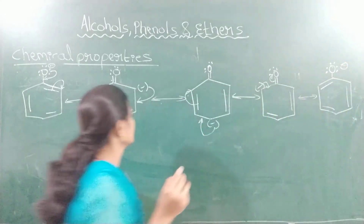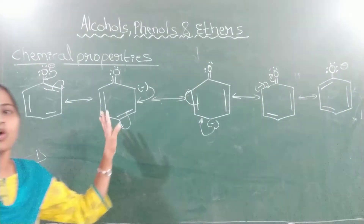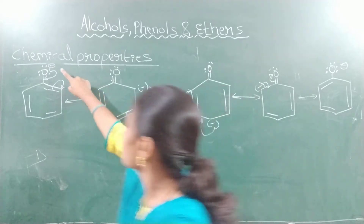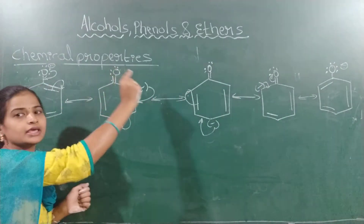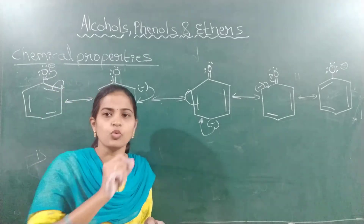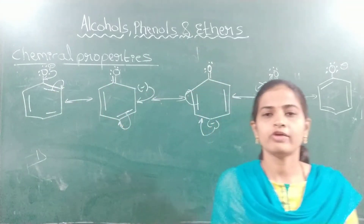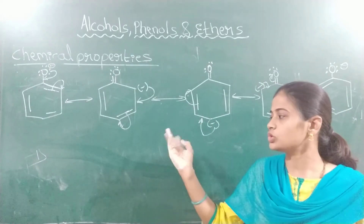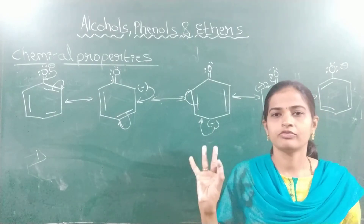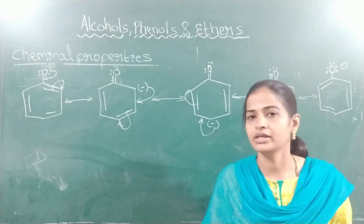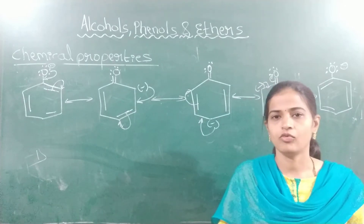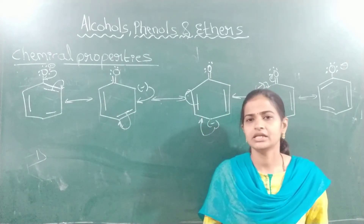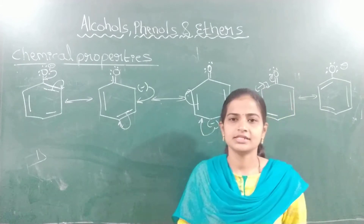The negative charge is delocalized all over the ring. These two factors make phenate ion more stable: there is no charge separation, and the negative charge of oxygen is delocalized all over the benzene ring. Therefore, phenate ion is more stable than phenol — and this is the very best reason for phenol to act as an acid.